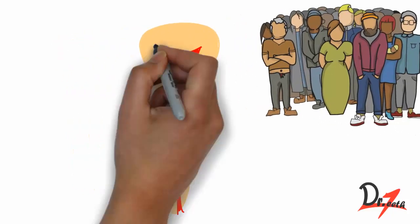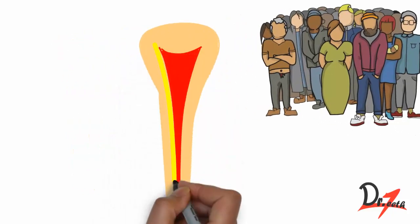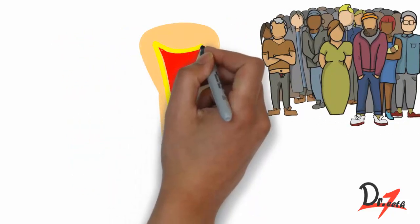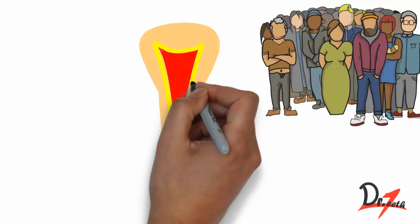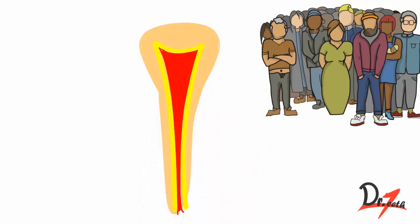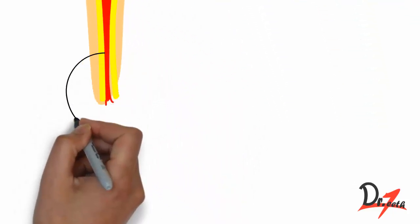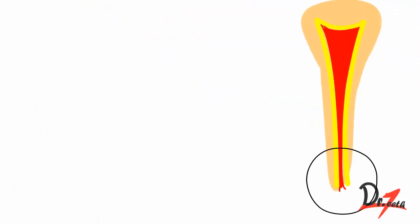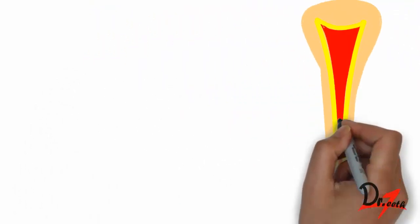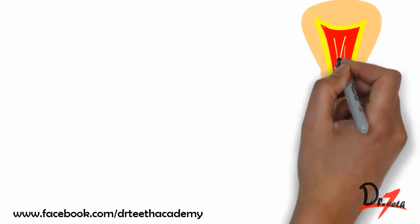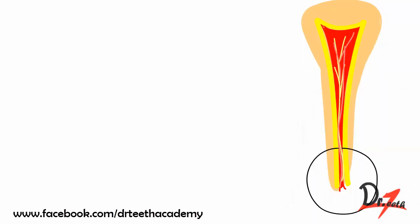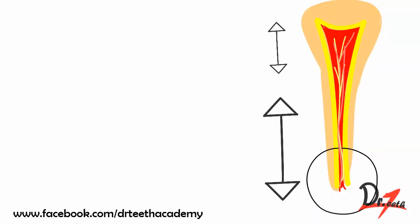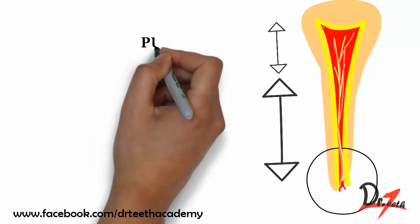The pulp is the central cavity within the tooth and is surrounded by dentine from all sides except at the apical foramen — a space at the root apex from where blood vessels and nerves enter the tooth and keep it alive. The pulp cavity has two parts: the pulp chamber and the root canal.